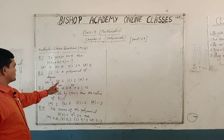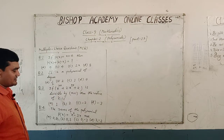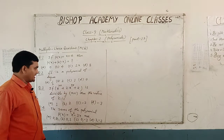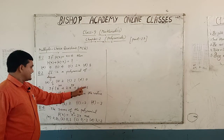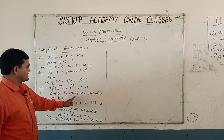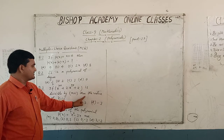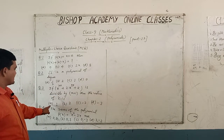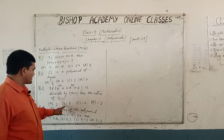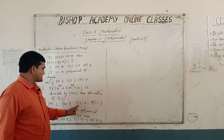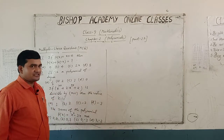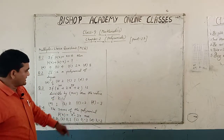Question number 3 is: if x raised to the power 100 plus 2 into x raised to the power 99 plus k is divisible by x plus 1, then the value of k is — option A is 1, option B is 2, option C is minus 2, option D is minus 2.